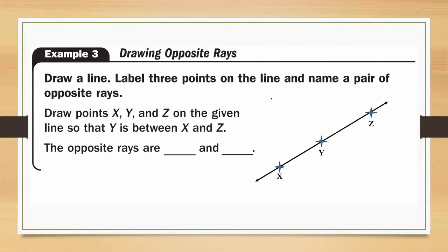The opposite rays, so we're going to start at Y since we are looking for opposite rays and go outside to each of the other points. Our opposite rays are ray YX and ray YZ.